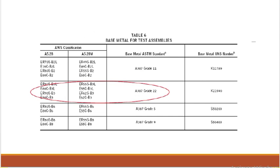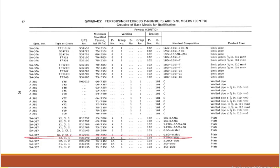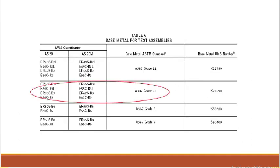Which specific electrodes can you use? Under SFA 5.28, options include ER80S, ER80C, ER90S. Under SFA 5.28M: ER55S, ER55C, ER62S, ER62C. There are many electrodes, so we have to check the chemical composition. The chemical composition of the filler metal should be equivalent to the base metal. For A387 Grade 22, the filler metal strength should always be equal to or greater than the base metal.